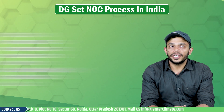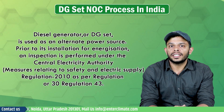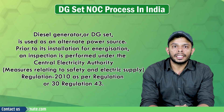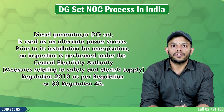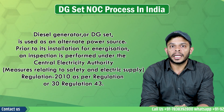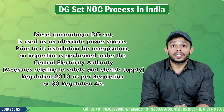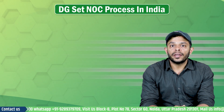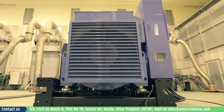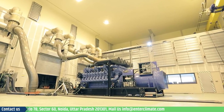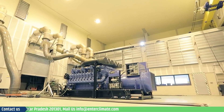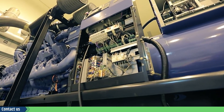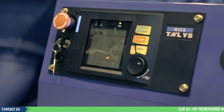A diesel generator or DG-SET is used as an alternate to a regular power source. Prior to its installation and energisation, an inspection is performed under the Central Electricity Authority Regulations of 2010 under Regulations 30 and 43. The applicant has to apply online to the department for this NOC in two stages: first for the approval of the generating SET plan, and thereafter to get the diesel generator inspected by submitting a work completion report.